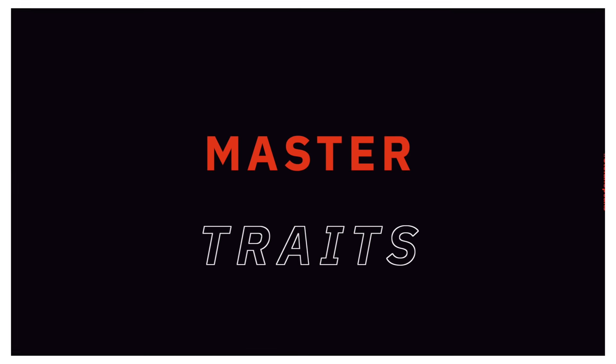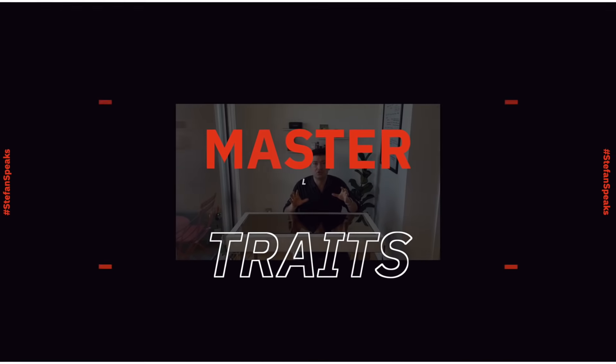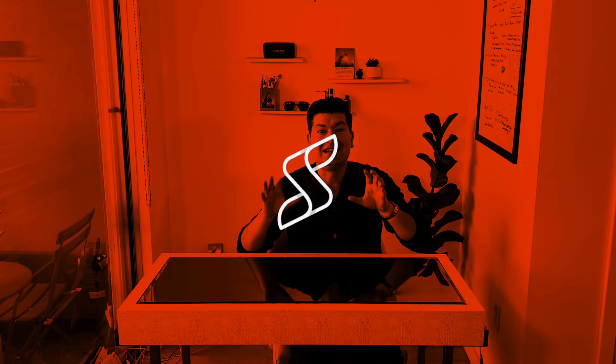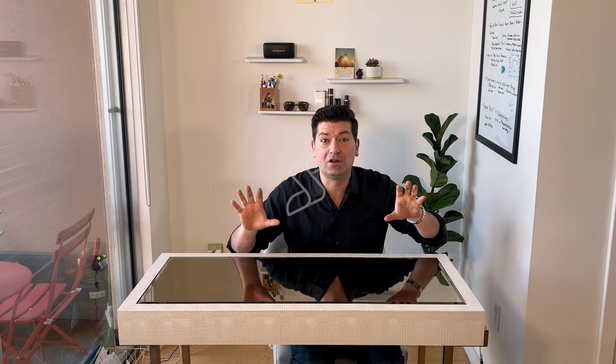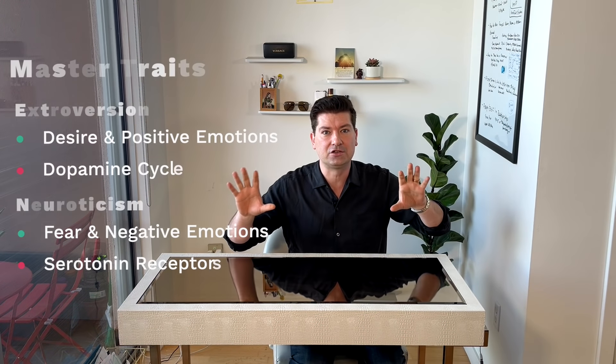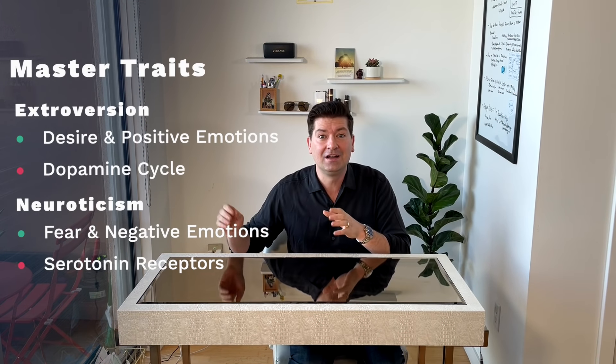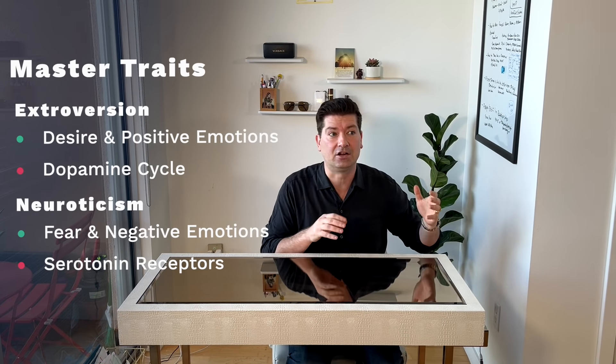This is where we get our first two master traits. The two master traits are extraversion and neuroticism, and the best way to think of these two master traits is fear and desire.